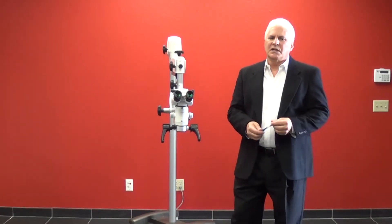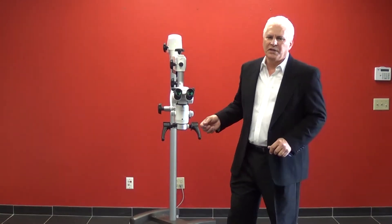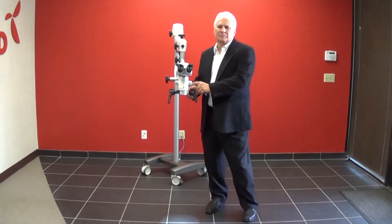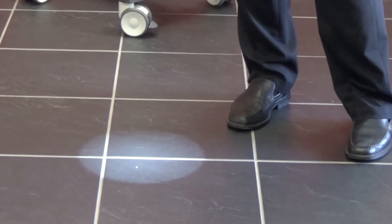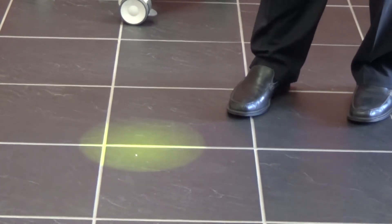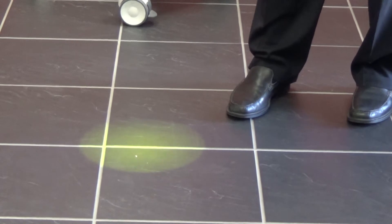The filter selector on the dental and ENT models come with yellow and green filters. Yellow filters are helpful in slowing down the curing of resins and epoxies in dentistry.